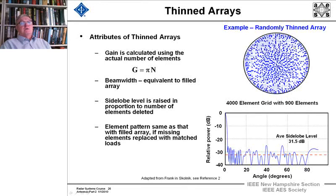And this is an example taken from Joe Frank in Meryl Skolnik's handbook of a randomly thinned array of 4,000 element grid with 900 elements, which I've re-rendered. And you can see that you get 31.5 dB average side lobe level. The gain is calculated using the actual number of elements. It's g equals pi n.